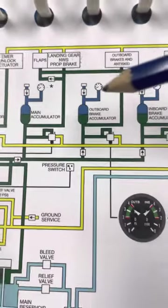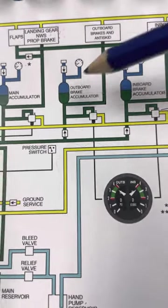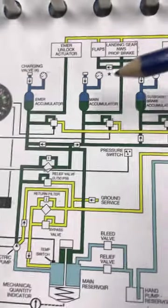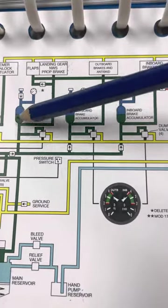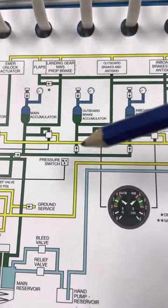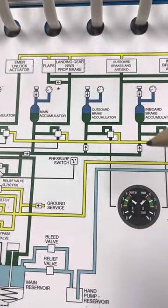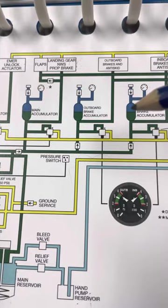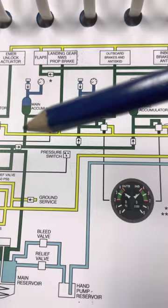Now, other accumulators that we have, we have an outboard brake accumulator and we have an inboard brake accumulator. These are pressurized either from the pump itself or its secondary form of pressurization. The main accumulator backfills these things. Notice, as it comes down, that there's a one-way check valve here and a one-way check valve here leading into the inboard and outboard brake accumulators, but there's not a one-way check valve leading directly into the main accumulator.